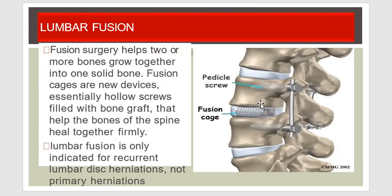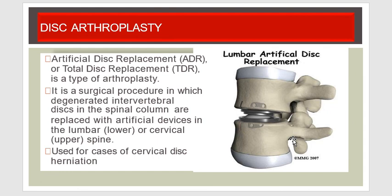This shows a fusion cage and pedicle screws used for fixation. Fusion surgery is done to join two or more bones into one solid bone. Fusion cages are hollow screws filled with bone grafts that help the bones of the spine heal together firmly. Fusion is only indicated for recurrent lumbar disc herniations, not primary herniation. Disc arthroplasty — artificial disc replacement (ADR) or total disc replacement (TDR) — is a surgical procedure in which a degenerated intervertebral disc is replaced by an artificial device in the lower lumbar or cervical spine.